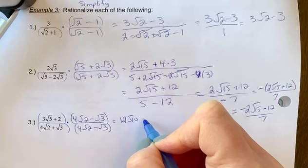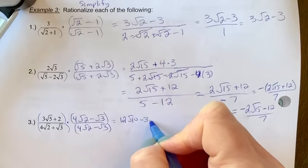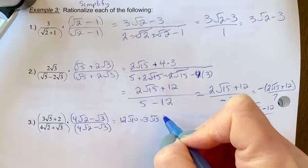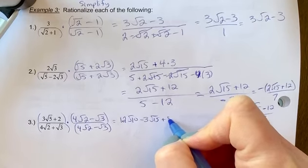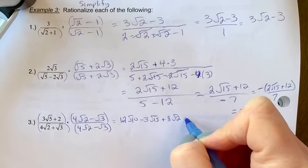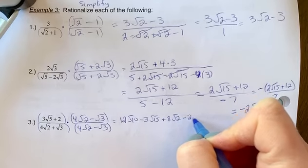Outside you're going to get minus 3 root 15, inside is going to be plus 8 root 2, and then last is going to be minus 2 root 3.